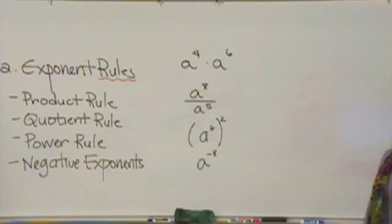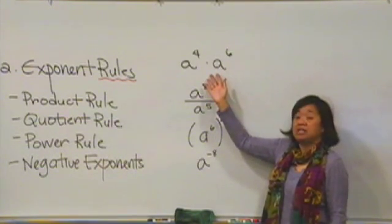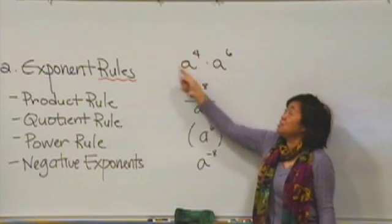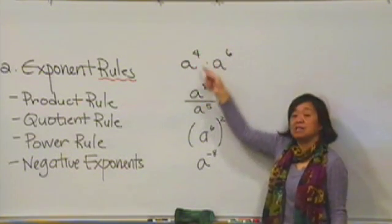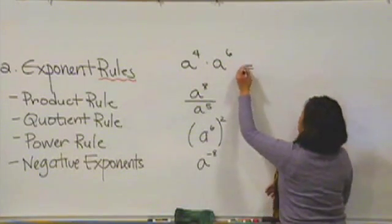All right, hopefully you paused. So, let's go ahead and work these out. Remember, exponents are simply abbreviations. So, this would be four a's followed by six a's. If you were to count up all you had after that, this would be a to the tenth.